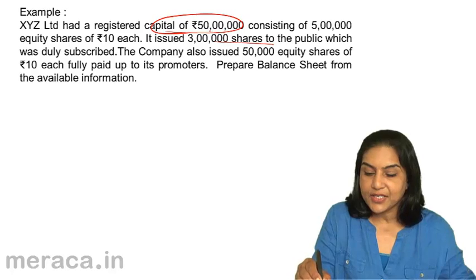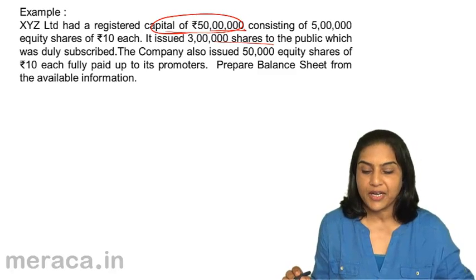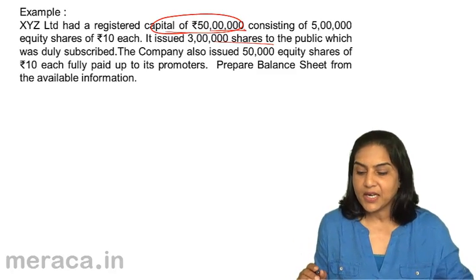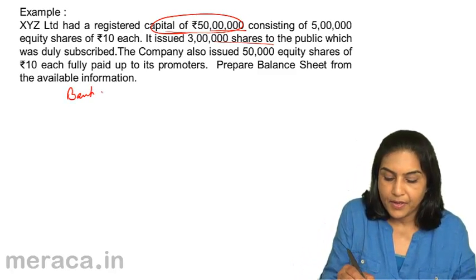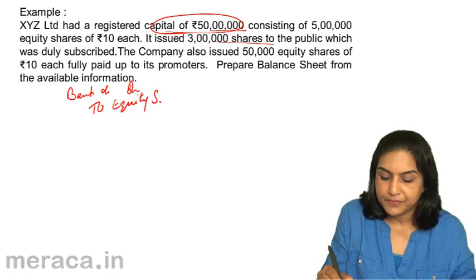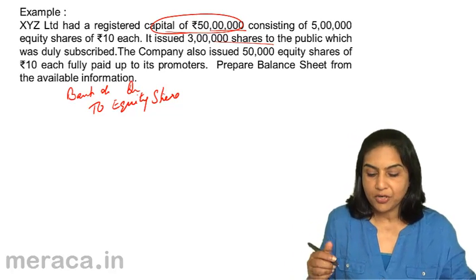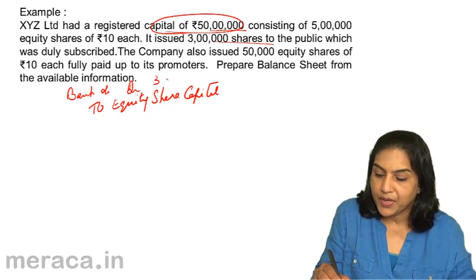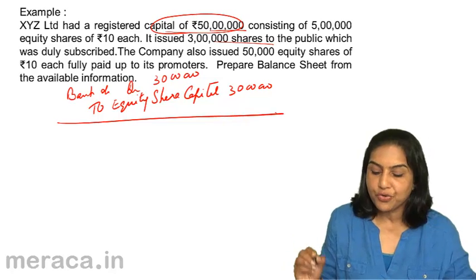The company had a registered capital of 5 lakh shares of 10 each, or 50 lakhs. It issued 3 lakh shares to the public which was duly subscribed. To pass an accounting entry for this issue of shares to the public: bank account debit to equity share capital — we would put it through the share application allotment account, then share application allotment account debit to share capital. Bank account debit to equity share capital: 30 lakhs. This is for issue of shares to the public.